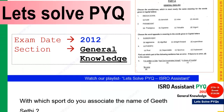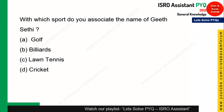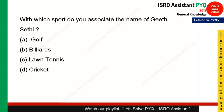Let's begin the session. The first question is: with which sport do you associate the name of Geet Seti? Geet Seti is a very popular billiard player and was quite popular around 2012, so this is a current affairs question. Those who chose option B — Billiards — are correct.